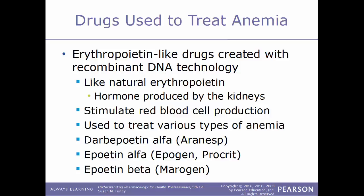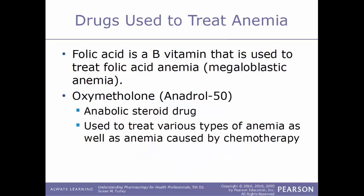Although created through recombinant DNA technology, these drugs are very similar to natural erythropoietin, a hormone produced by the kidneys that controls how many red blood cells are produced. They are used to treat various types of anemia. Examples include darbepoetin alfa, also known as Aranesp; epoetin alfa, also known as Epogen or Procrit; and epoetin beta, also known as Mircera. Folic acid is a B vitamin used to treat folic acid anemia, also known as megaloblastic anemia.